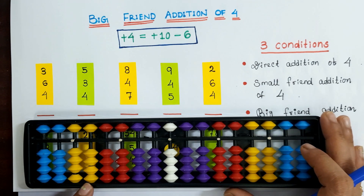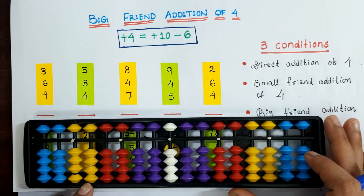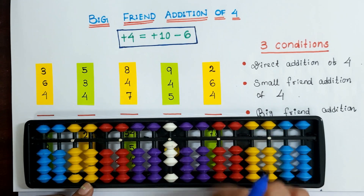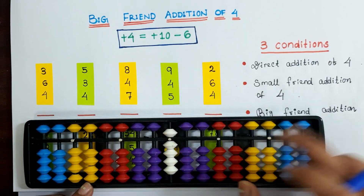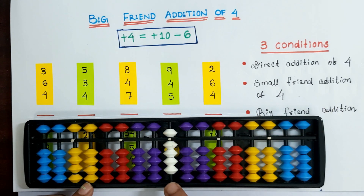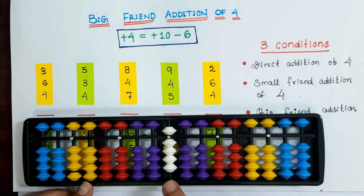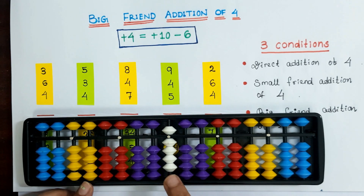The first question here we have is 3 plus 6 plus 4. Here we don't have 4 more bits to add at the one slot. We have already used all the bits at the one slot — all upper bits and lower bits at the one slot. So here, direct addition of 4 is not possible.